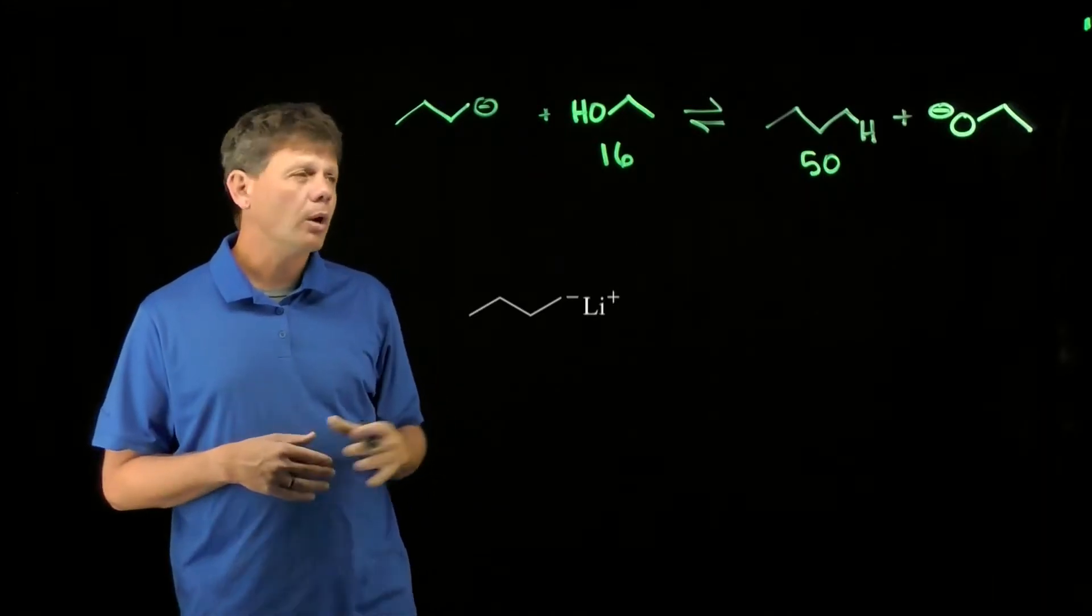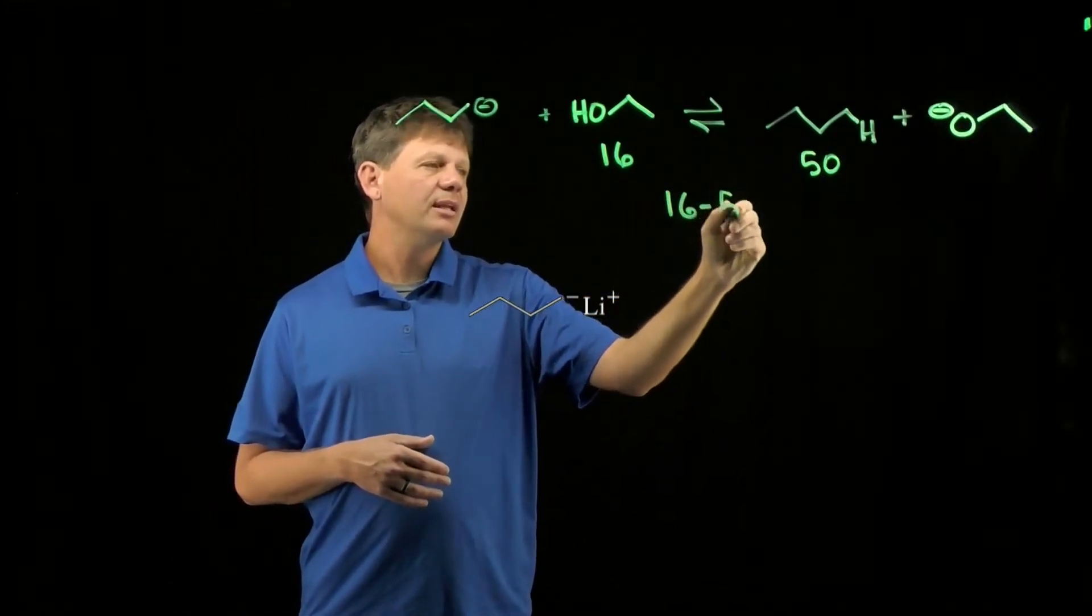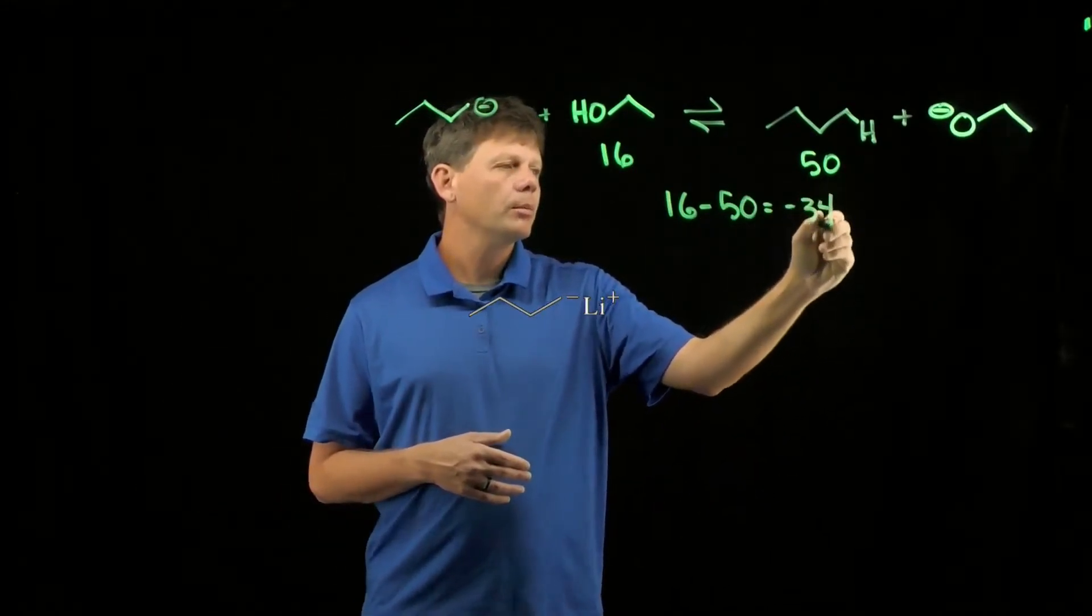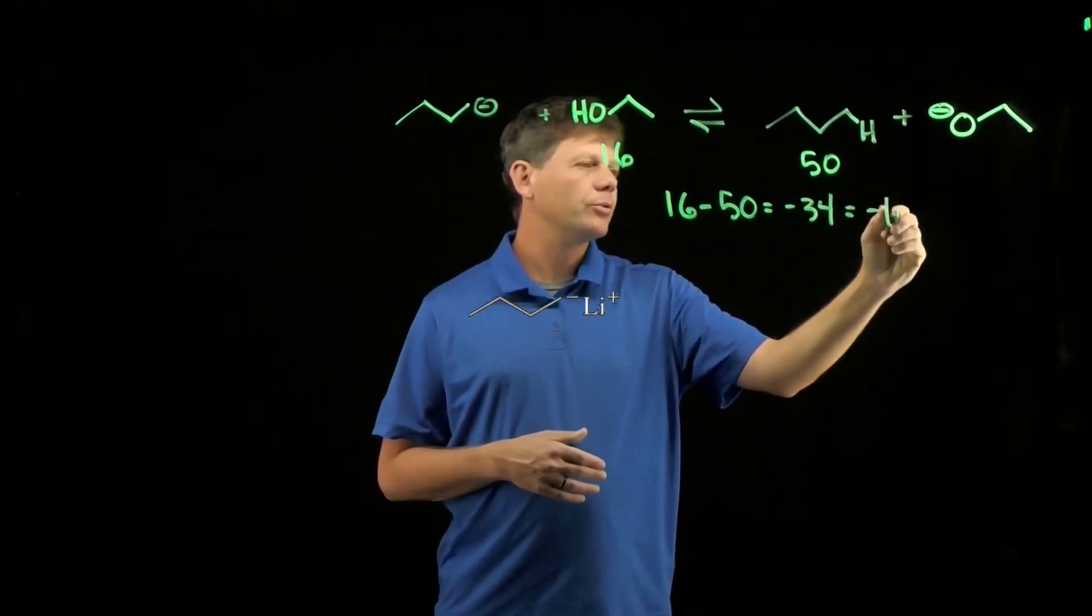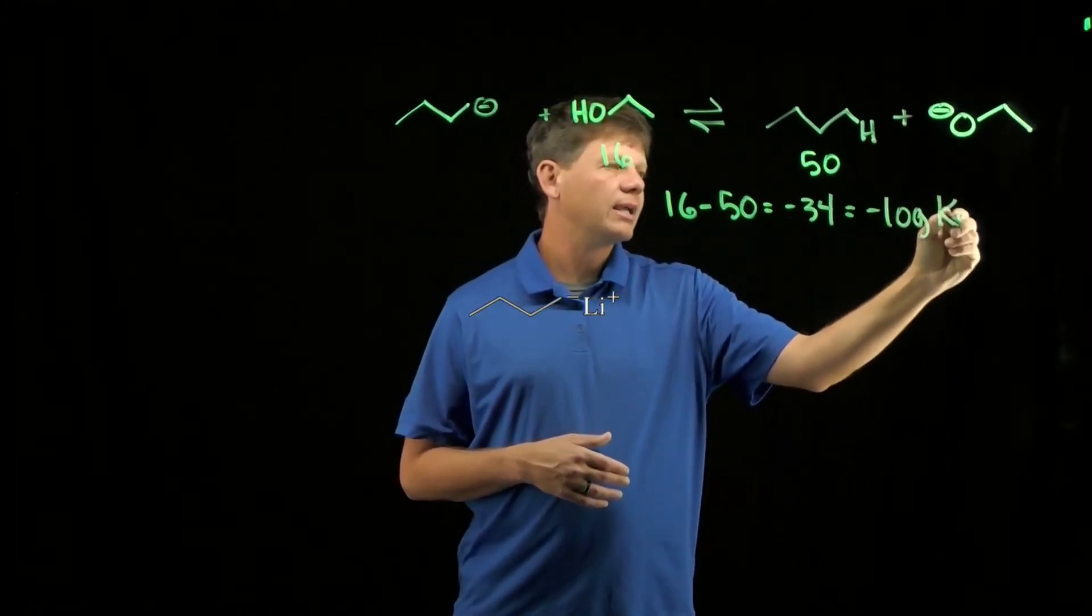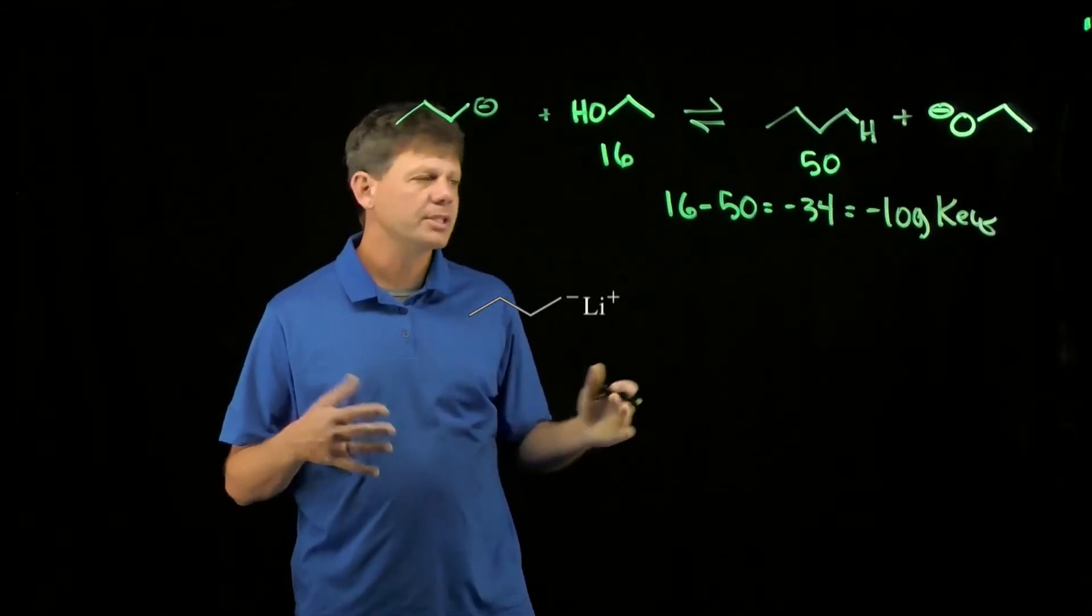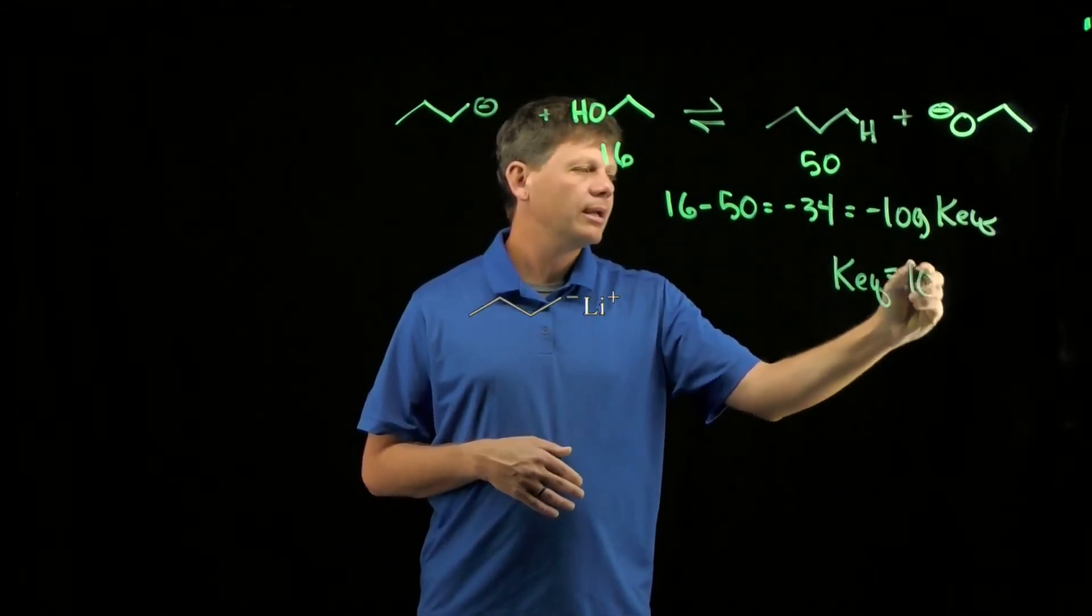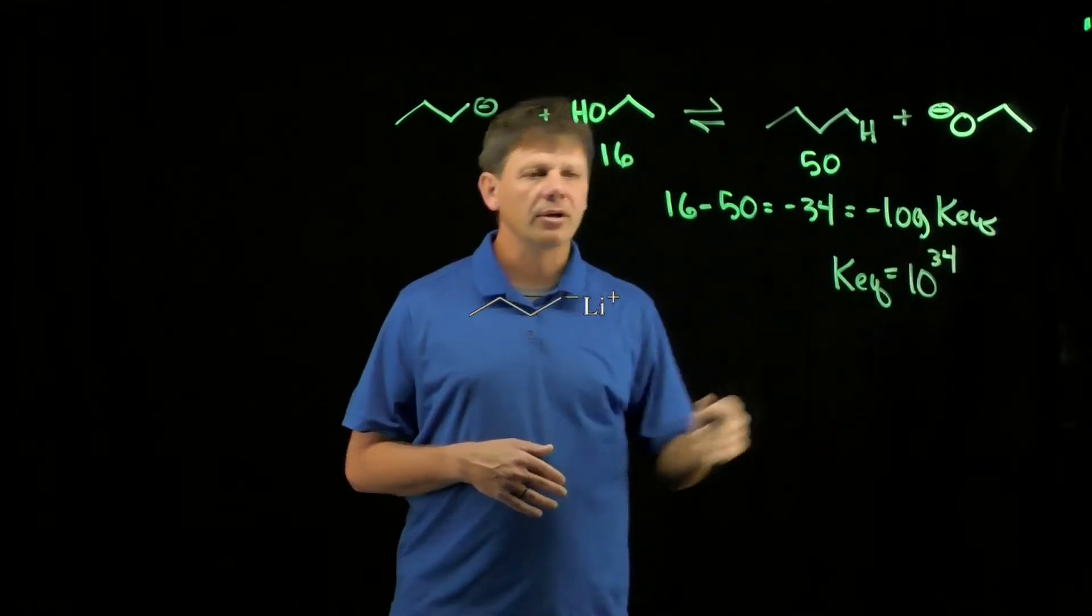We can answer it quantitatively by doing our math. 16 minus 50 is going to equal negative 34, which we know is equal to the negative log of Keq. Rearranging that equation gives us that Keq for this equilibrium is 10 to the 34th.